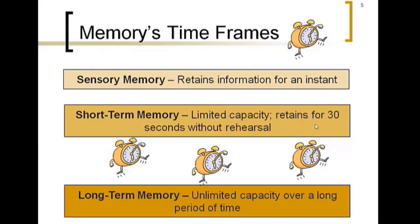Without rehearsing it, you'll lose information from short-term memory in about 30 seconds. Short-term memory also has a limited capacity. Sensory memory has a much shorter duration but a larger capacity. With short-term memory, every person's capacity is different, but usually it's somewhere between five to nine items — you might hear 'seven plus or minus two' — which is just a way of saying about five to nine items is the maximum most people can hold in short-term memory.